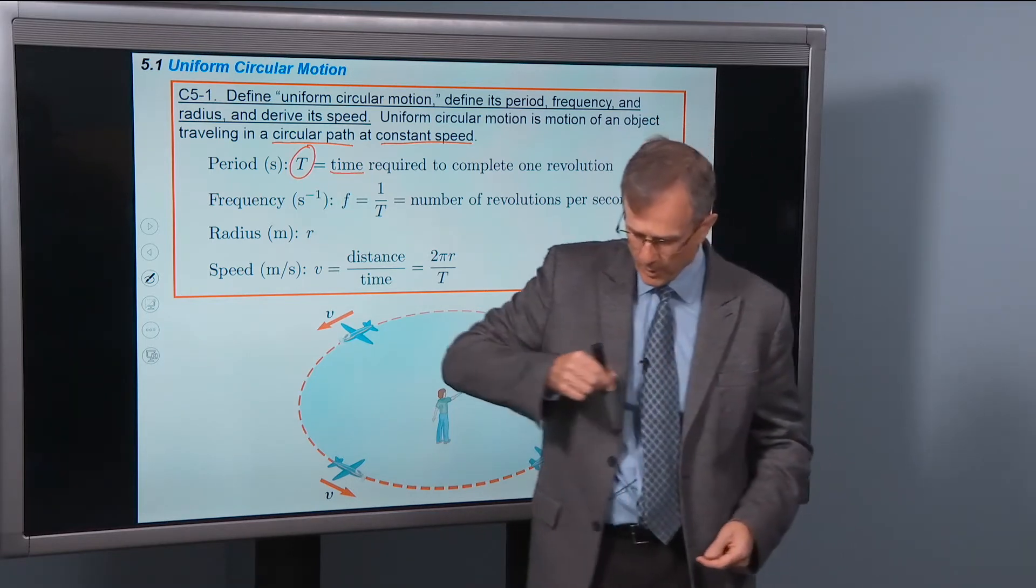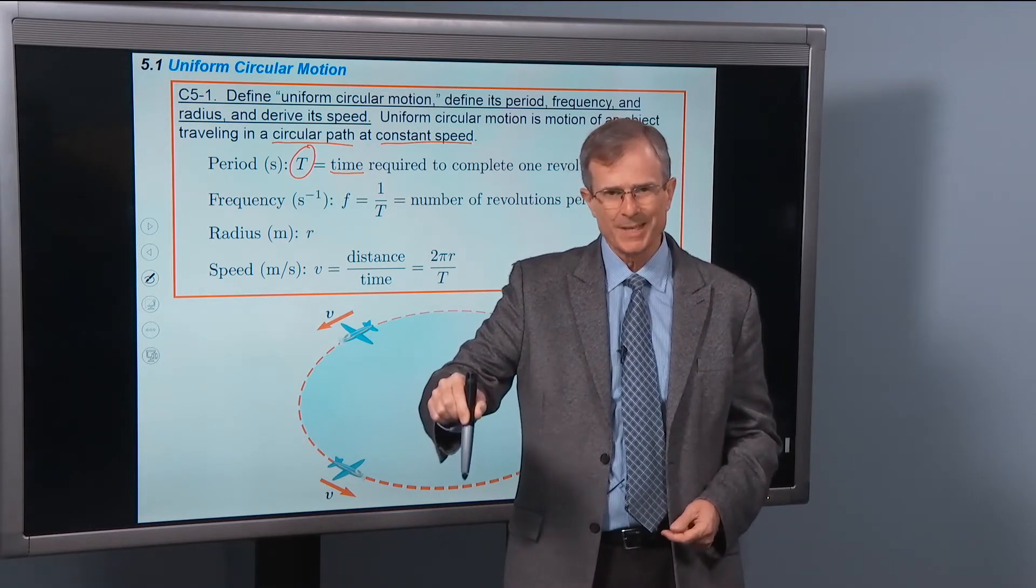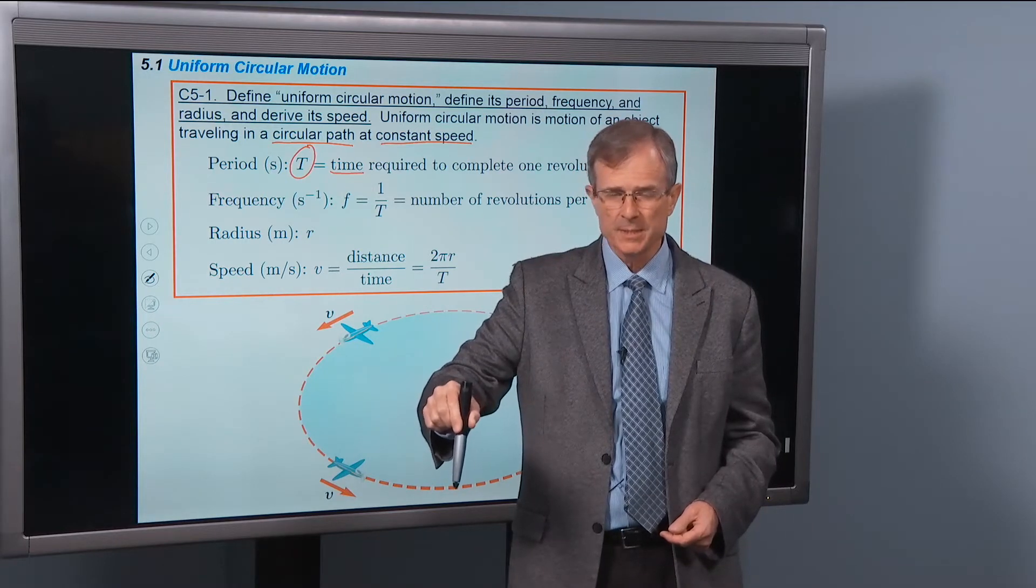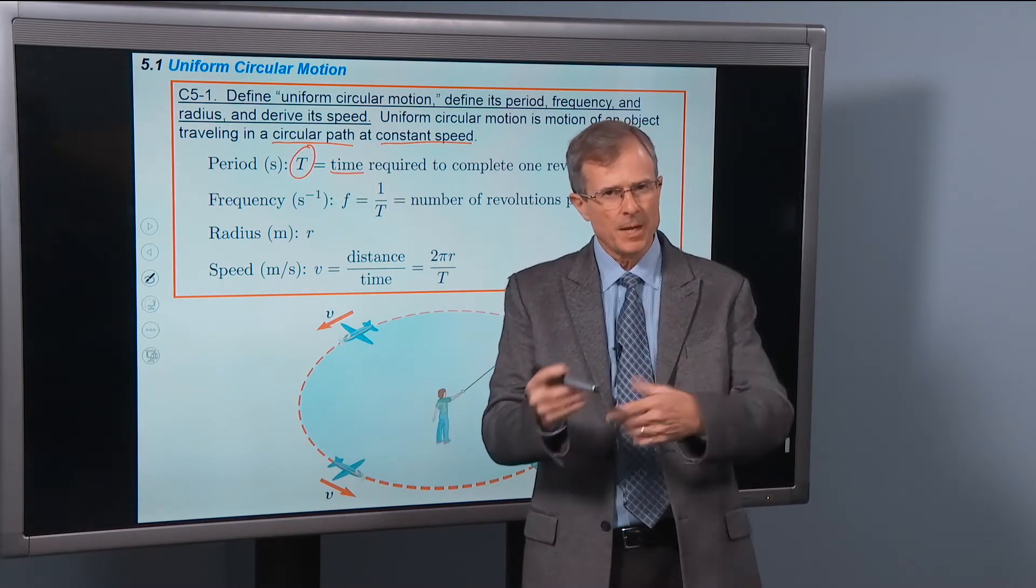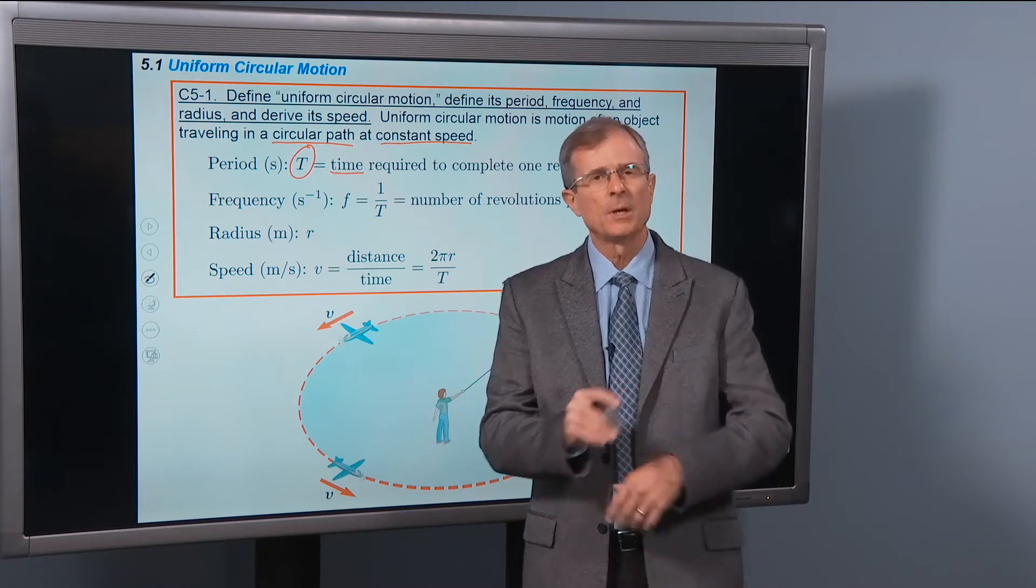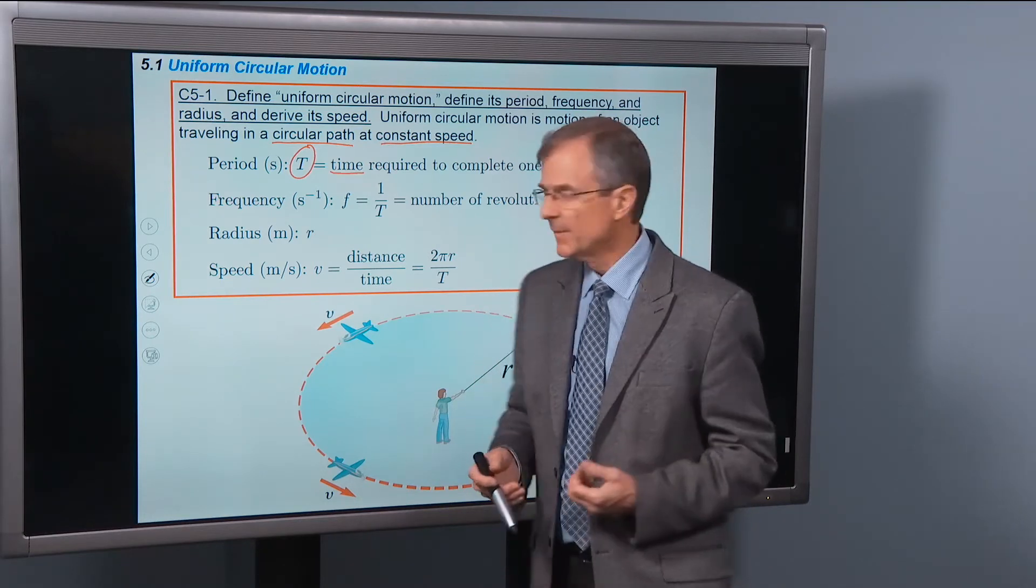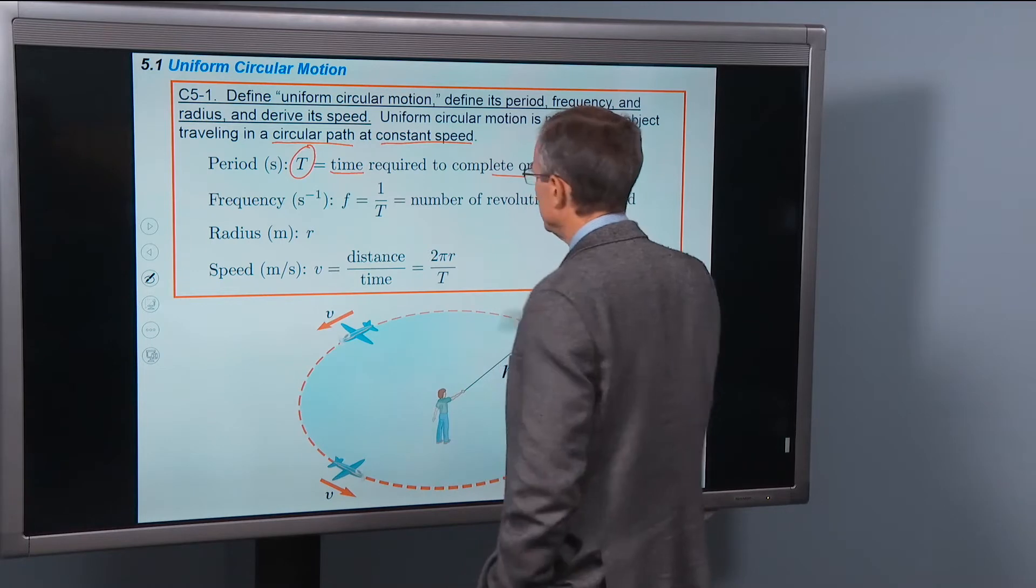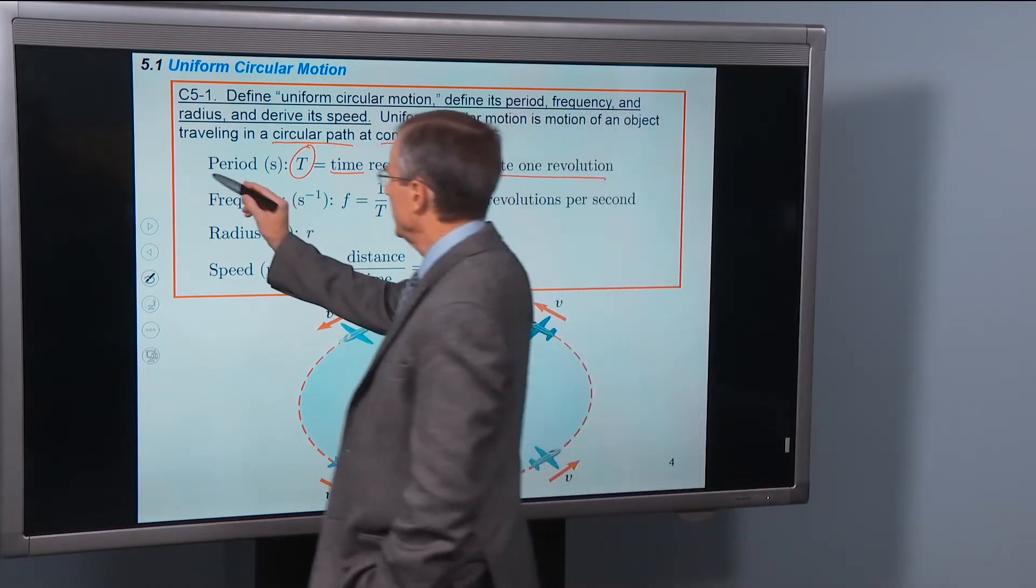Let it go all the way around one time, and stopped the stopwatch at that same, when the ball is in that same location. That time that appears on your stopwatch is called the period. Just the name we give to the time required for one complete revolution. That's the period.